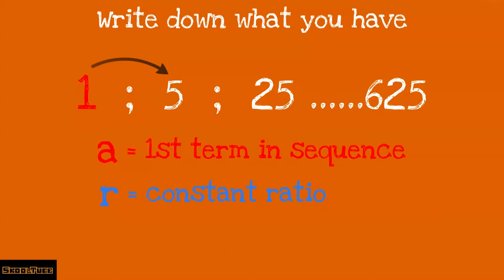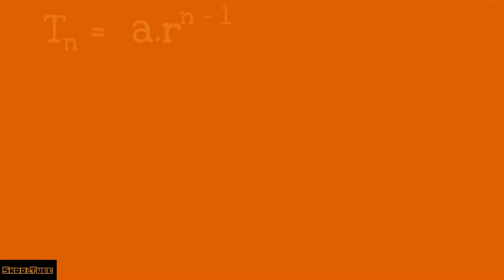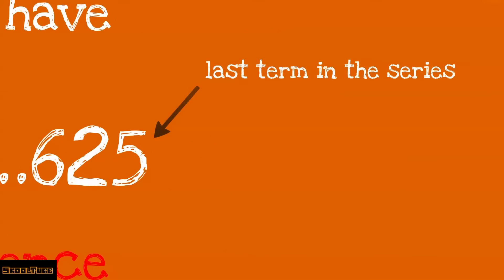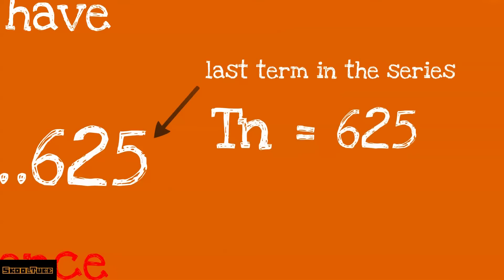Using T2 over T1 equals T3 over T2, the constant ratio is 5. The formula for the nth term is Tn equals A multiplied by R exponent n minus 1. Now, 625 is the last term, so Tn is 625.